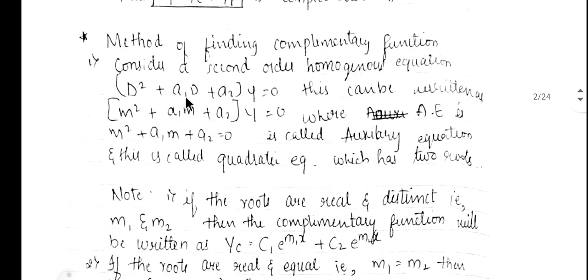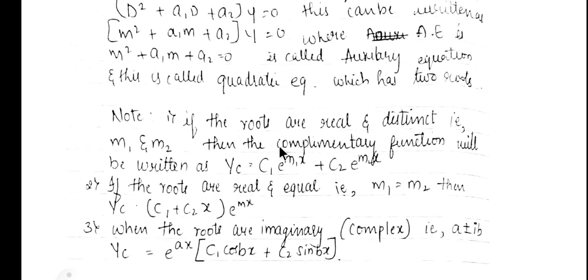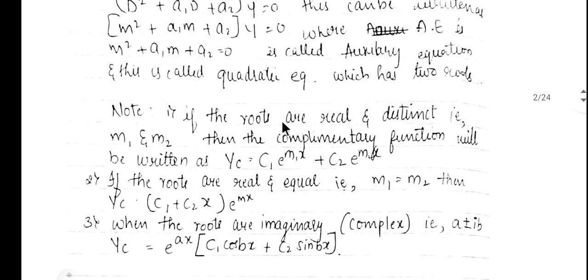Now the question is how to find the complementary function. Consider the second-order homogeneous equation (D² + a1·D + a2)·y = 0. Replacing D with m, the auxiliary equation is m² + a1·m + a2 = 0, which is a quadratic equation with two roots. Depending on the nature of the roots, we write the complementary function differently. If the roots are real and distinct — m1 and m2 — then yc = c1·e^(m1·x) + c2·e^(m2·x).